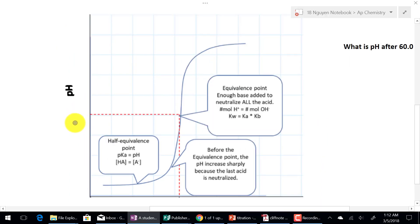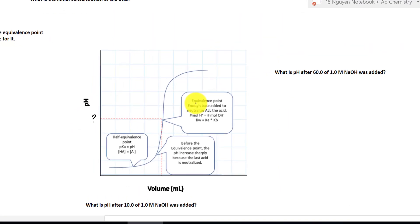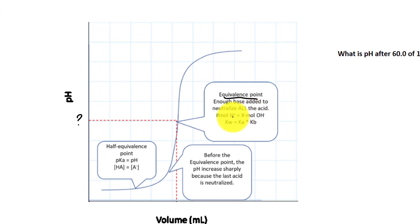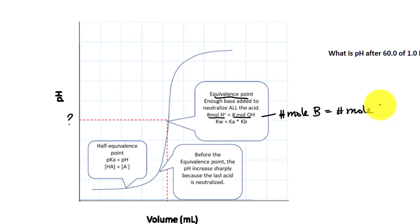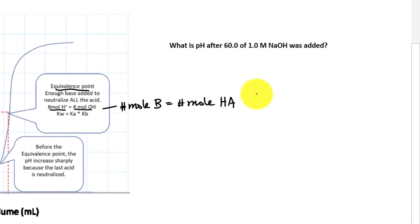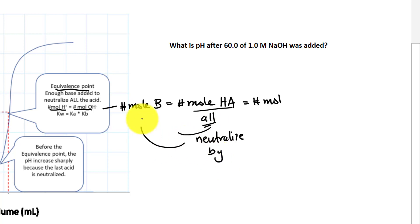We have to realize that the pH of 7 is no longer there — we don't really know what it is anymore. But what we know for sure is that at the equivalent point, the moles of base is equal to the moles of OH⁻. That means the number of moles of base used to neutralize all the acid is equal to the number of moles of the acid itself, which is HA. Most importantly, this is also equal to the number of moles of the conjugate base being made, because it has all been neutralized by the strong base.